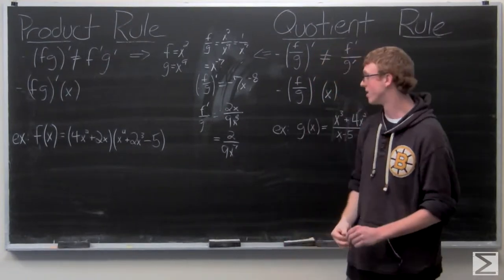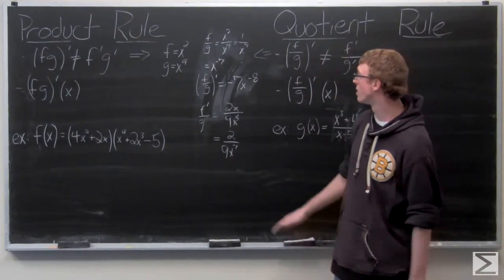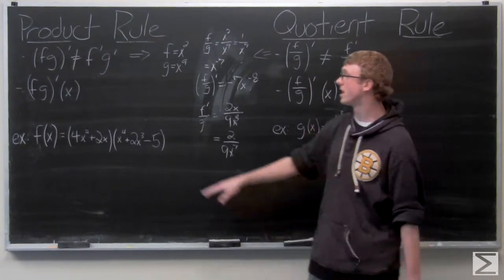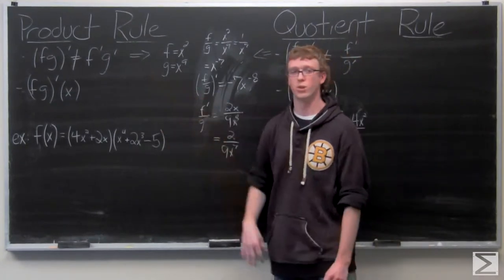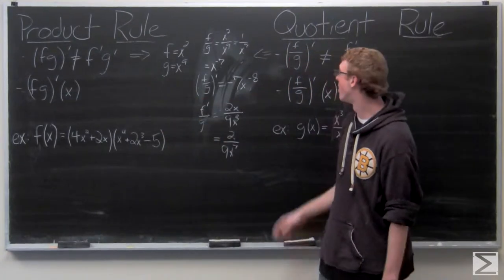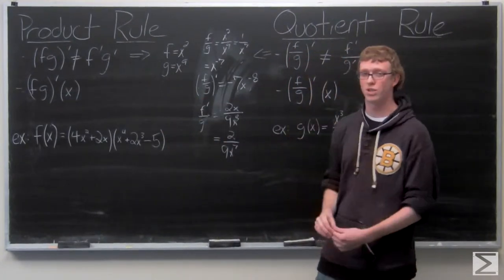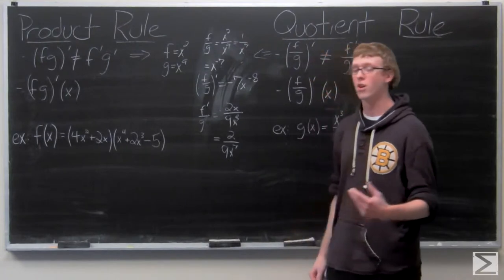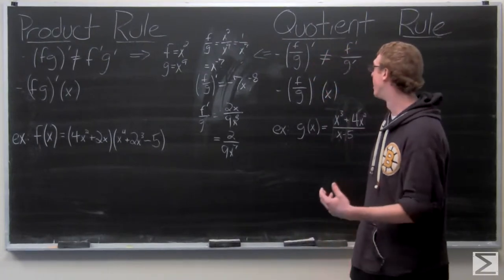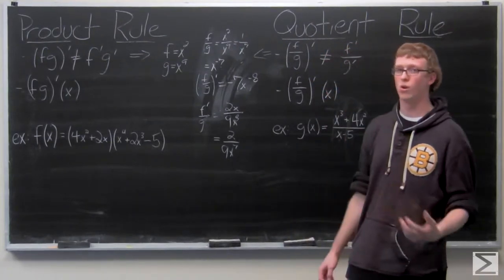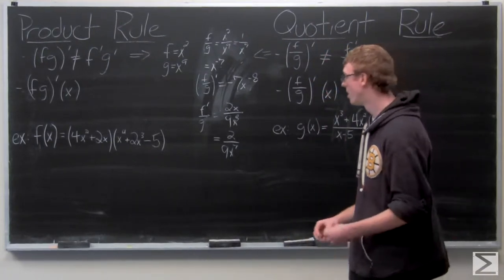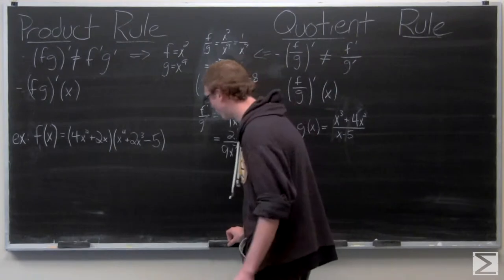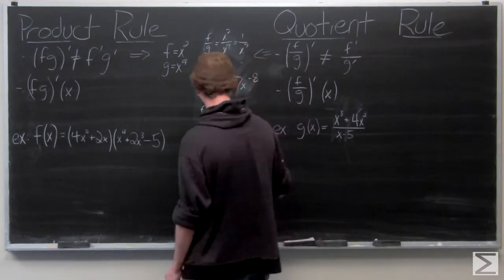So we don't get the same answers. We need to make sure that we're not making the mistake of doing fg prime or f over g prime equals f prime g prime or f prime over g prime. Now we're going to take a look at what the rules actually tell us.